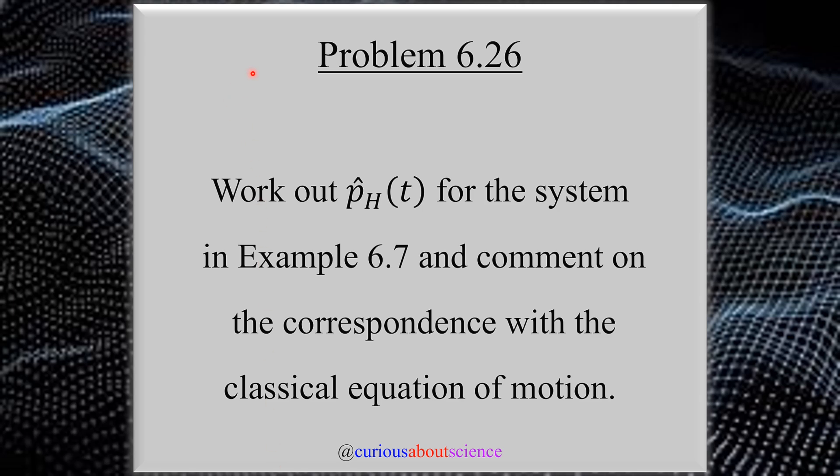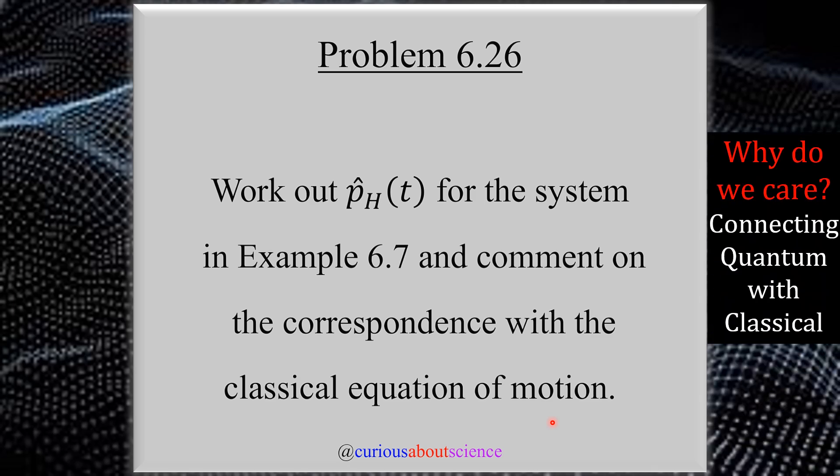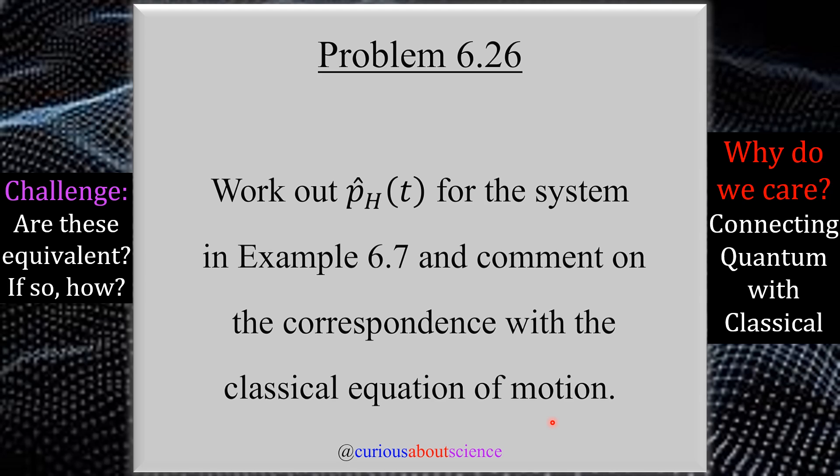In this problem, we're tasked with working out the operator p̂ in the Heisenberg picture as a function of time for the system in example 6.7, which deals with the harmonic oscillator, and then comment on the correspondence with the classical equation of motion. Why do we care about this picture? This is trying to connect the quantum with the classical, and we'll be able to see how those things interact very quickly. It's actually kind of cool how it comes together.